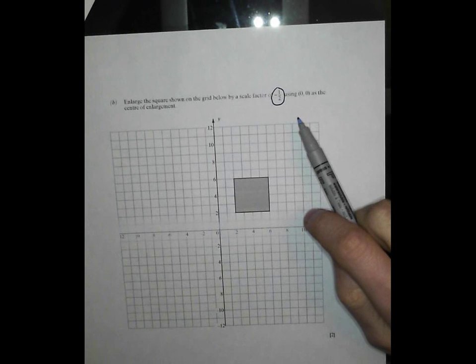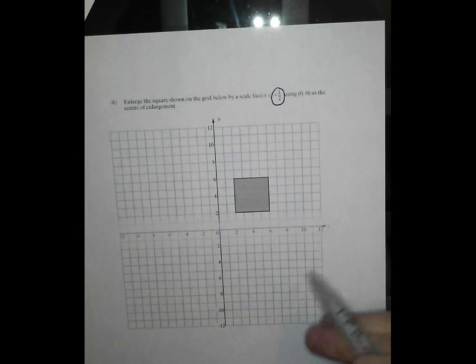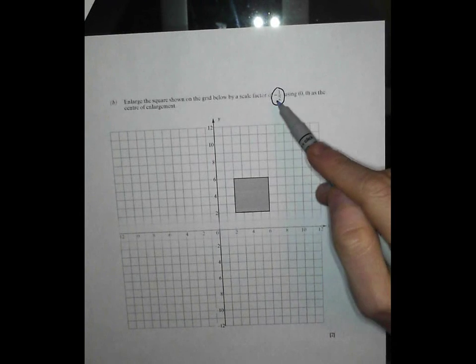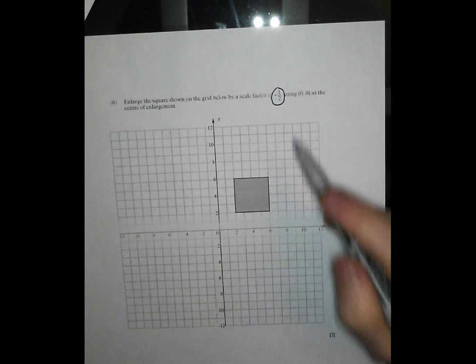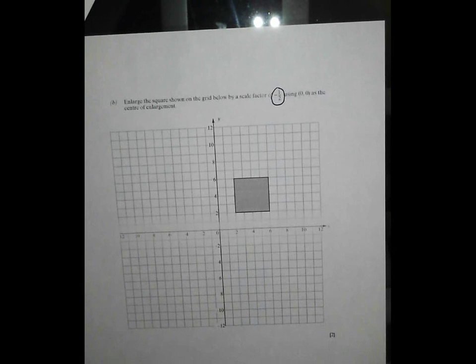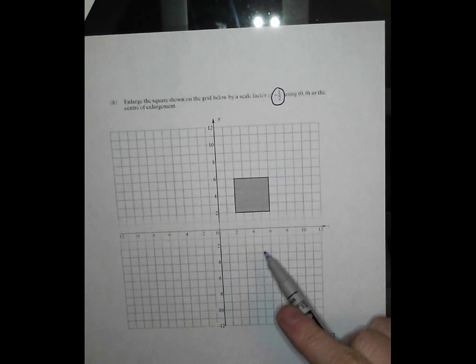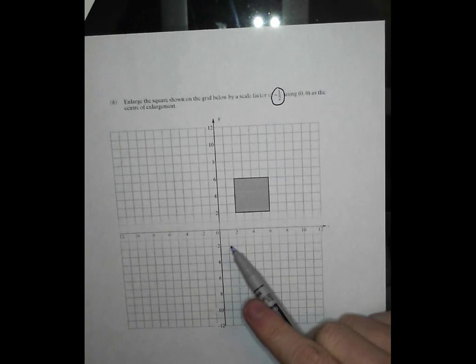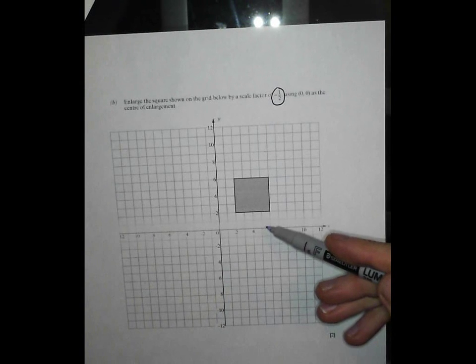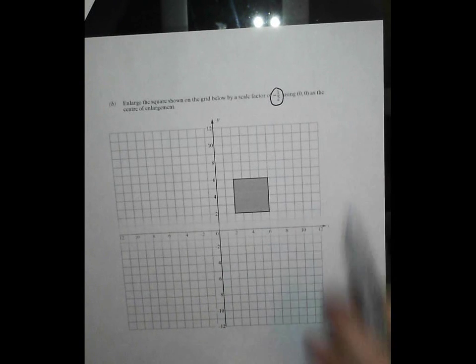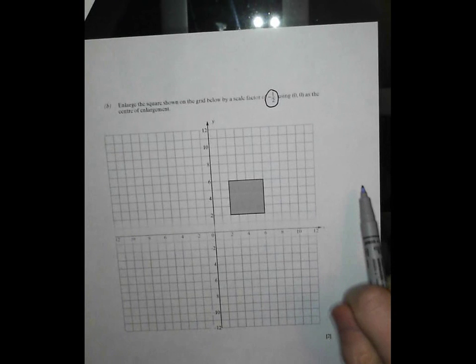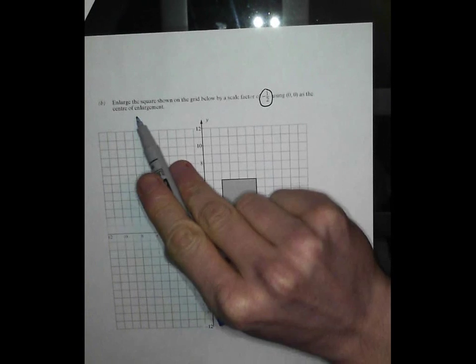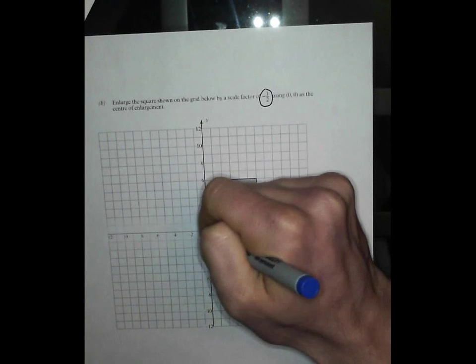Scale factor 2, you go twice as far. Scale factor half, you go half as far. No problem. It's the minus that causes the issue. But the minus just means you go the opposite direction. So if you go right when you do the enlargement, you actually go left. If you go up, well when you do the enlargement you go down. Now I like to keep a track of this and I'll show you what I mean when I'm going through it. Using 0, 0 as a center of enlargement.